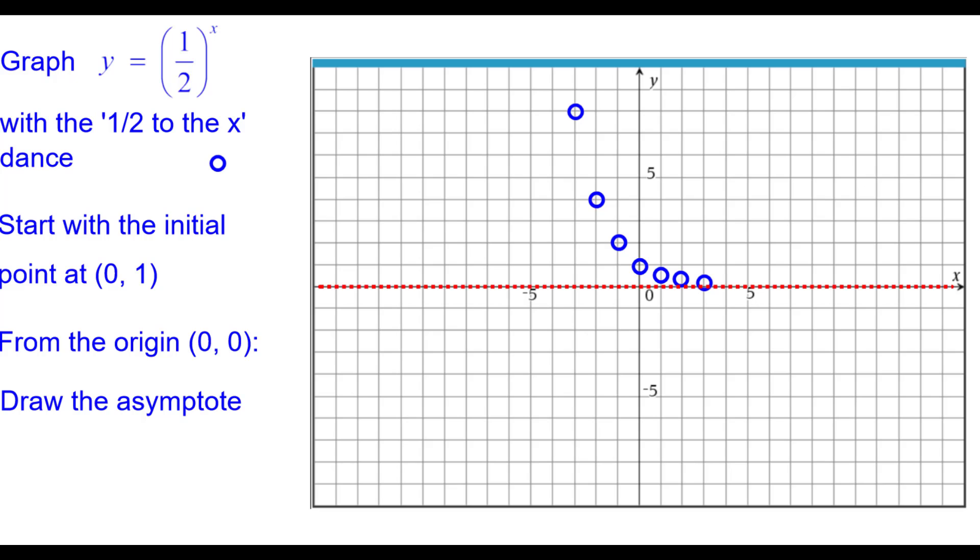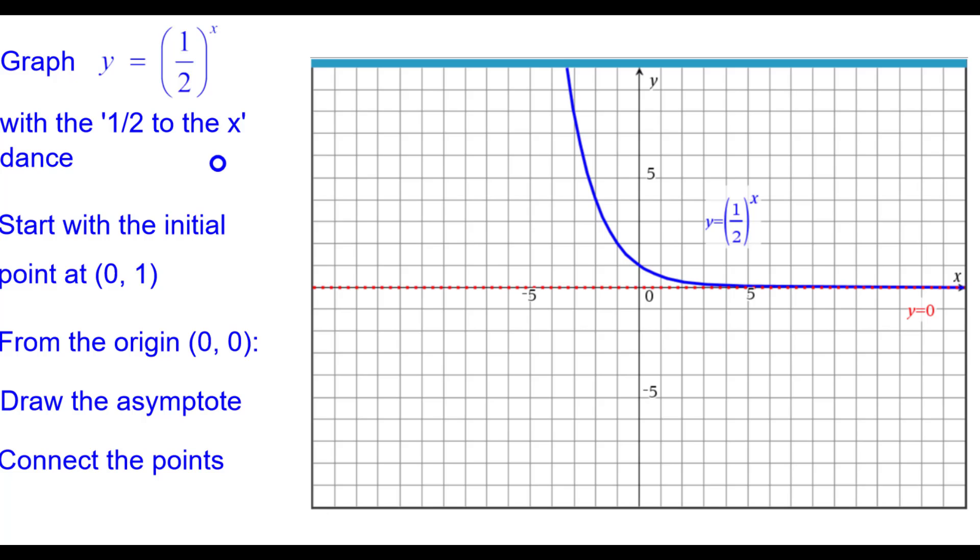Draw the asymptote, which is the x-axis. Connect the points. And this is an example of exponential decay. As x gets larger, y gets smaller very, very quickly. Now I'm trying to keep it real.